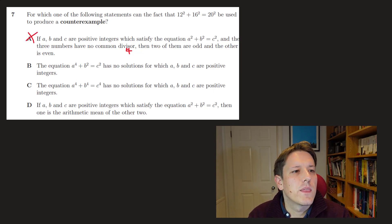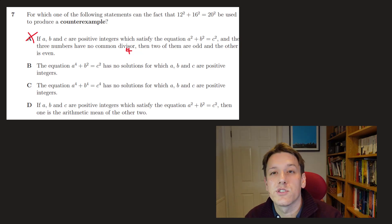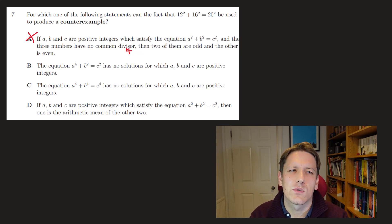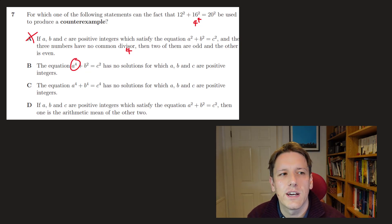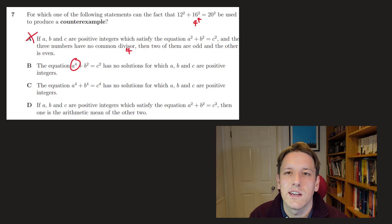In B it says the equation A to the 4 plus B squared equals C squared has no solutions for which A, B, and C are positive integers. You look at this and think, we've been given A squared plus B squared equals C squared here. There's no fourth power. Well, the thing is there is a fourth power in here because 16 is in itself a square number. So 16 squared we could write as 4 to the 4, and I'd get 4 to the 4 plus 12 squared equals 20 squared. So this equation does have a solution for which A, B, and C are positive integers. We found it here, 4, 12, and 20. So this can be used as a counterexample here. The answer to this question is B.